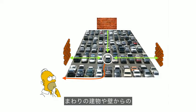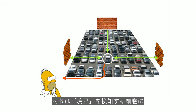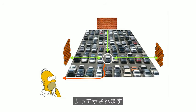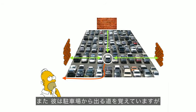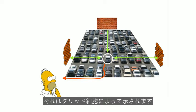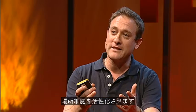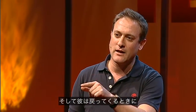So back to Homer. He's probably remembering where his car was in terms of the distances and directions to extended buildings and boundaries around the location where he parked, and that would be represented by the firing of boundary-detecting cells. He's also remembering the path he took out of the car park, which would be represented in the firing of grid cells.